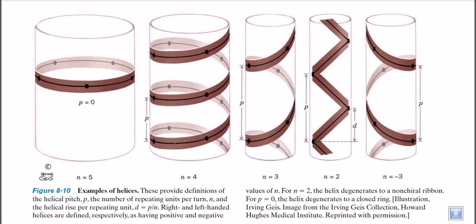The first thing I must talk about is the number of residues per turn. As the name suggests, this is really easy. Looking at this picture, if we think the black dots are the number of residues, then we find one, two, three, four, five — so the number of residues for this helix is five. We designate it with small n, meaning the number of residues per turn, in this case five. In the second picture the number of residues is four, and in this picture it is three.